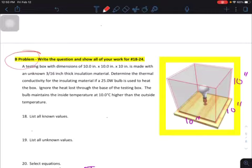It says a testing box with dimensions of 10 inches by 10 inches by 10 inches is made up of an unknown 3/16th inch thick insulation material. Determine the thermal conductivity. This is what we're looking for, the thermal conductivity, which you should know has the symbol of K. For the insulating material, if a 25 watt bulb, that would be the power.